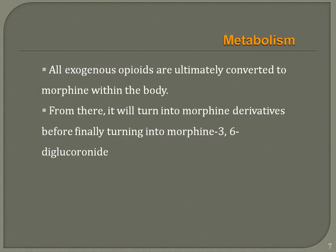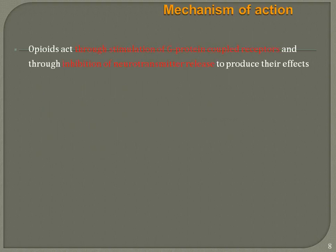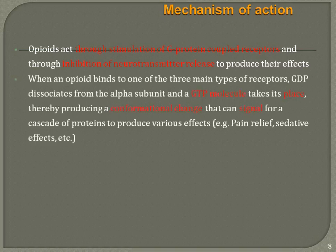The mechanism of action of opioids involves stimulation of G-protein coupled receptors and inhibition of neurotransmitter release. When opioids bind to one of the three main receptor types, GDP dissociates from the alpha subunit and GTP takes its place, producing a conformational change that signals a cascade of proteins to produce various effects such as pain relief.